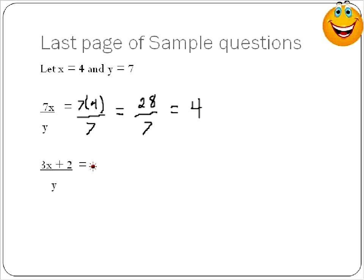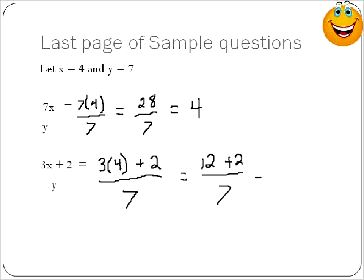For this next question, we do the same thing. We have 3 times x — substituting in 4 for x — so 3 times 4, plus 2, all over 7. First I'm going to do the top part and then take care of the fraction. So 3 times 4 is 12, plus 2 divided by 7. 12 plus 2 is 14, divided by 7. The fraction 14 over 7 is the same as 14 divided by 7, which equals 2.